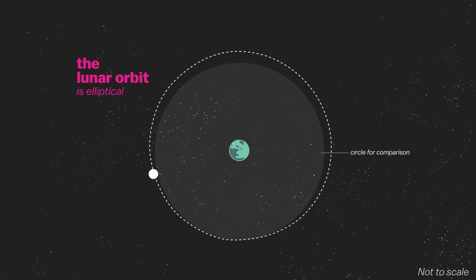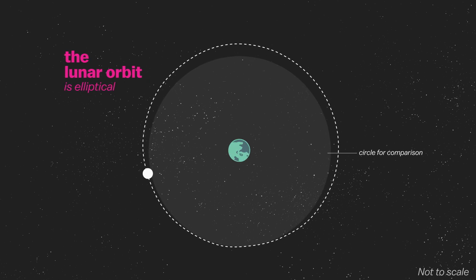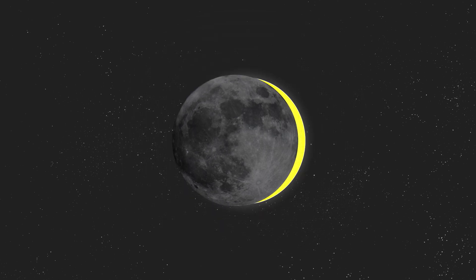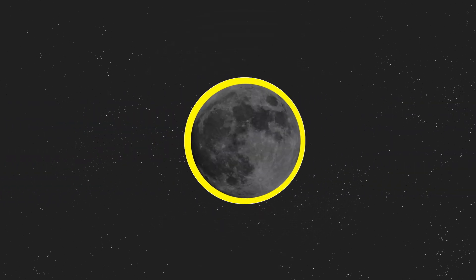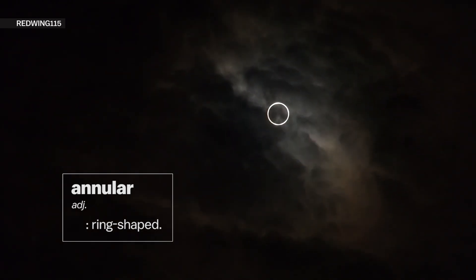The moon has an elliptical orbit though, so its size varies about 12% throughout the month. At its closest distance, we can get total solar eclipses. But when it's farthest away, we can get annular eclipses, where a ring of sunlight remains around the moon. In the far future, Earth will only get annular solar eclipses.